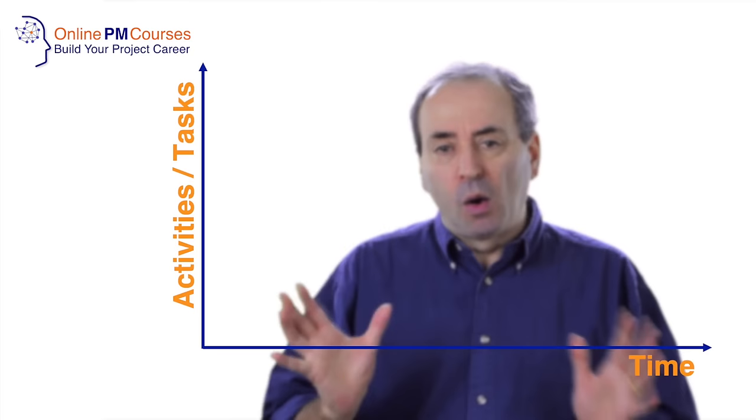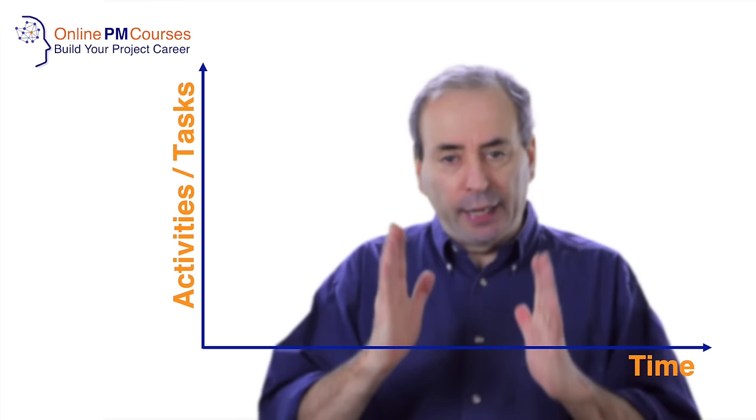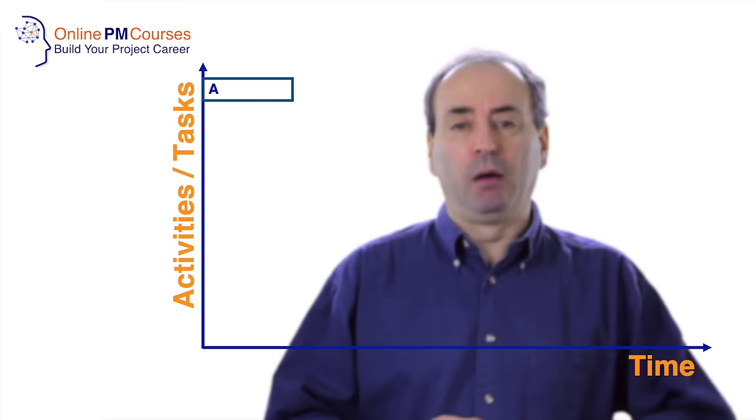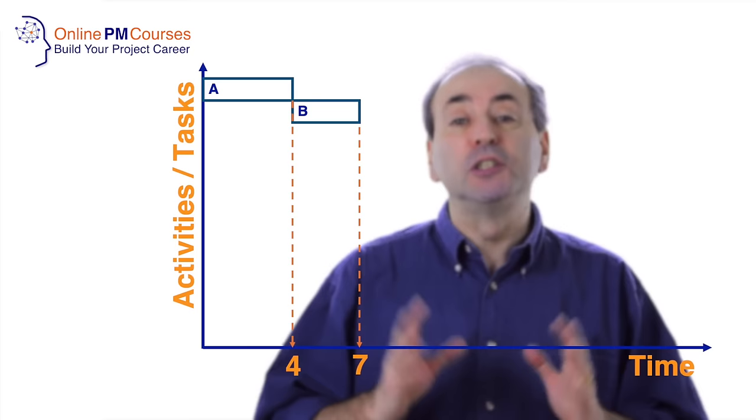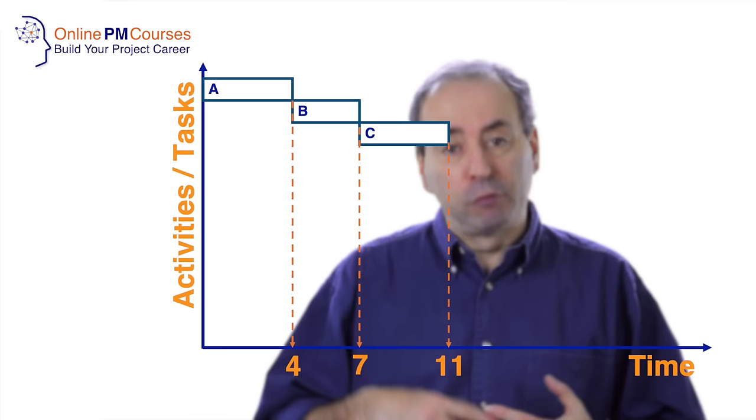Now once you've created your graph—and here's something important about the way Gantt charts work—equal units of distance along the horizontal axis represent equal units of time. Once you've created that, you represent each activity by a bar. The length of the bar represents the duration of the task, and the positioning represents the scheduling.